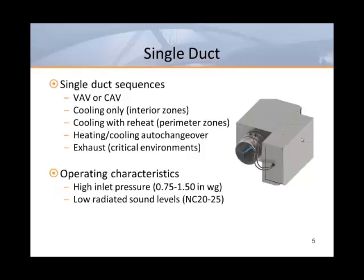If an air handler only supplies cooling, then interior zones will use cooling only units while the perimeter zones would most likely use some sort of heat. In this situation, any heat located at the box would be reheat. The box controls could also be used to operate auxiliary heat, such as a thin tube heater or a radiant panel. When there's heat in the air handler, it may be necessary to provide auto-changeover controls so that the box can reverse its operation to provide both VAV heating and VAV cooling.